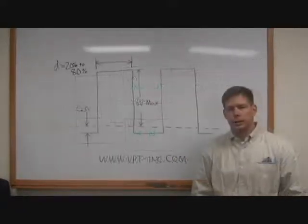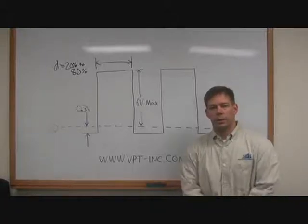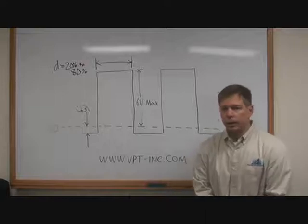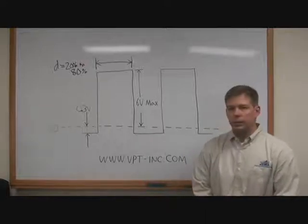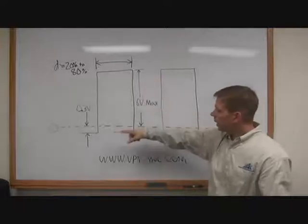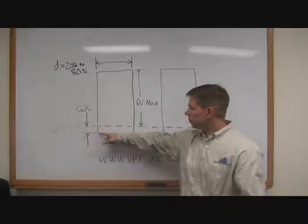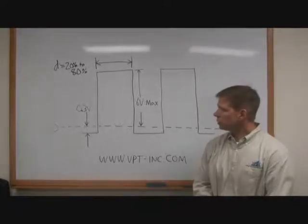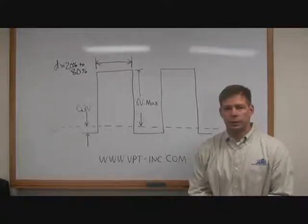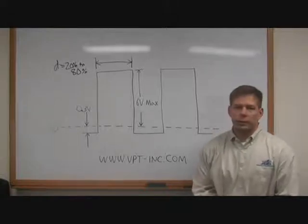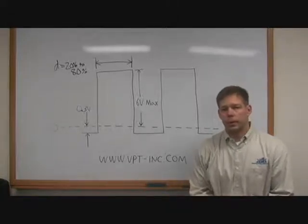The synchronization input signal specifications are the same for all VPT converters. It should be a TTL compatible signal with a maximum amplitude of 6 volts. The signal should never be allowed to go more than 0.3 volts below zero to prevent damage to the synchronization input pin. And the duty cycle of the signal should always be maintained between 20 and 80 percent.